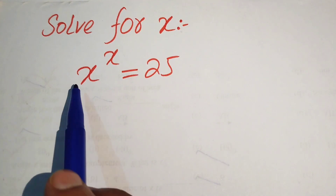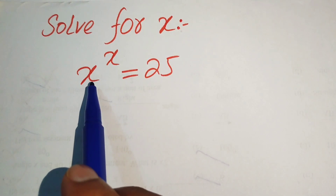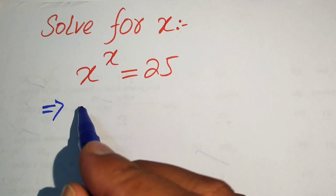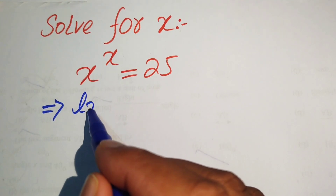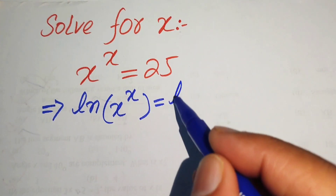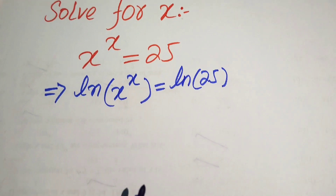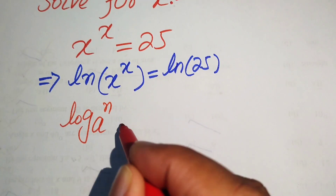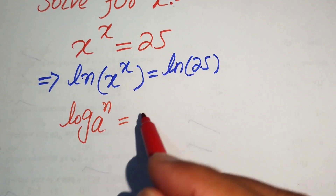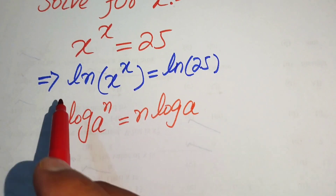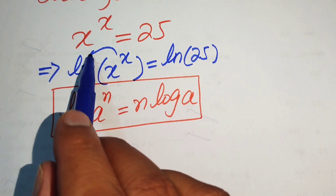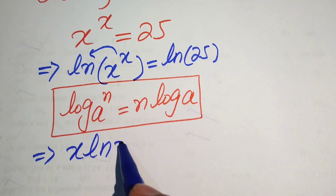Here the base and exponent are both variables. We take the natural log on both sides of this equation, written as log of x to the power of x equals log of 25. Using the log power property — log of a to the power of n equals n times log a — we move the exponent x to the front, giving us x times log x equals log of 25.